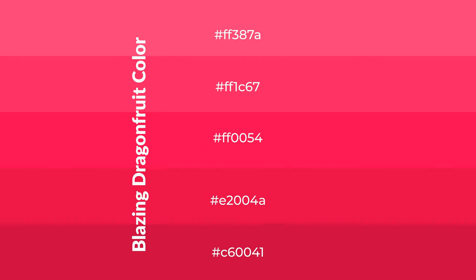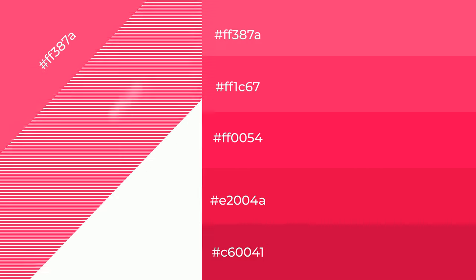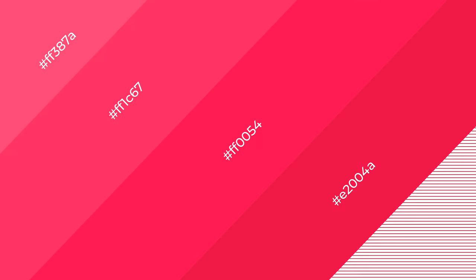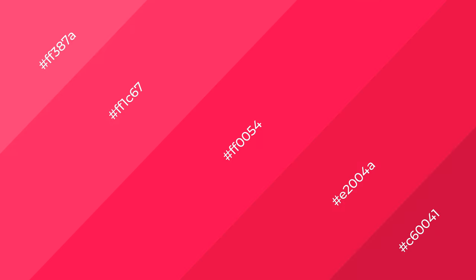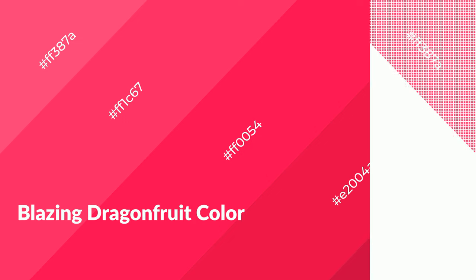To generate shades of a color, we add black to the color. Shades are used in patterns, 3D effects, and layers. Shades create depth and drama. Blazing dragon fruit is a warm color and it emits cozier and active emotions.